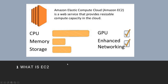What is EC2? Amazon EC2, or Amazon Elastic Compute Cloud, is a web service that provides resizable compute capacity in the cloud. It is designed for developers to have complete control over web scaling and computing resources. EC2 instances can be resized and the number of instances scaled up or down as per requirement.